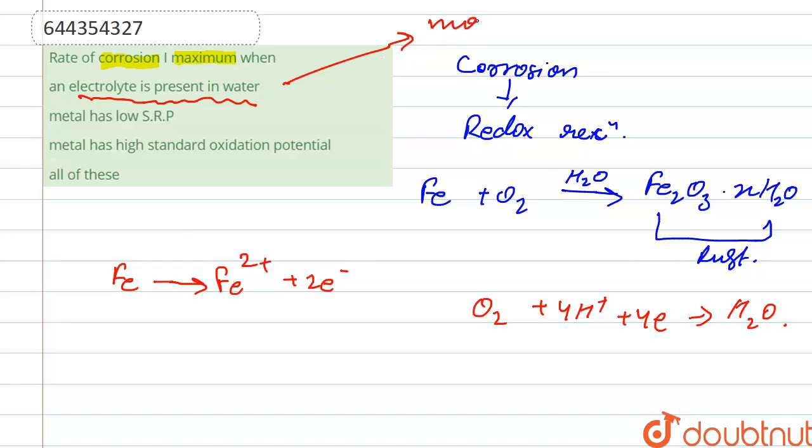So the rate of corrosion is maximum in the presence of electrolyte in water because movement of ions takes place rapidly. So this is correct.